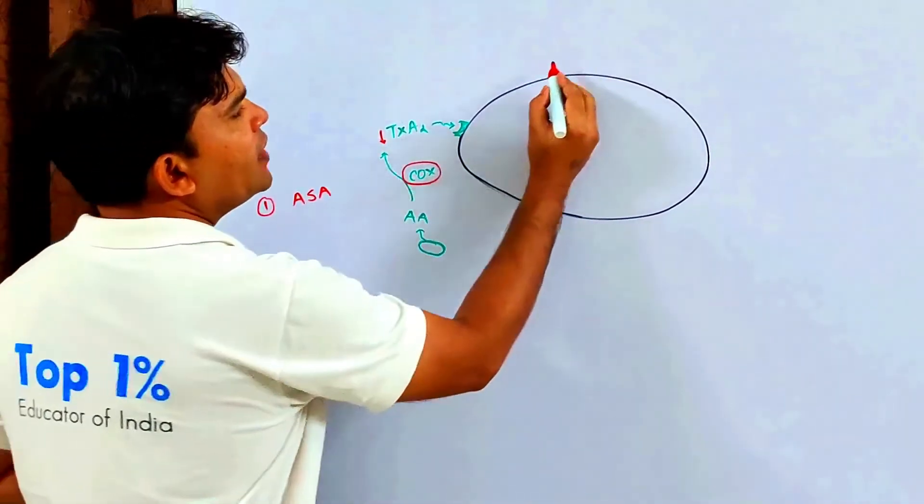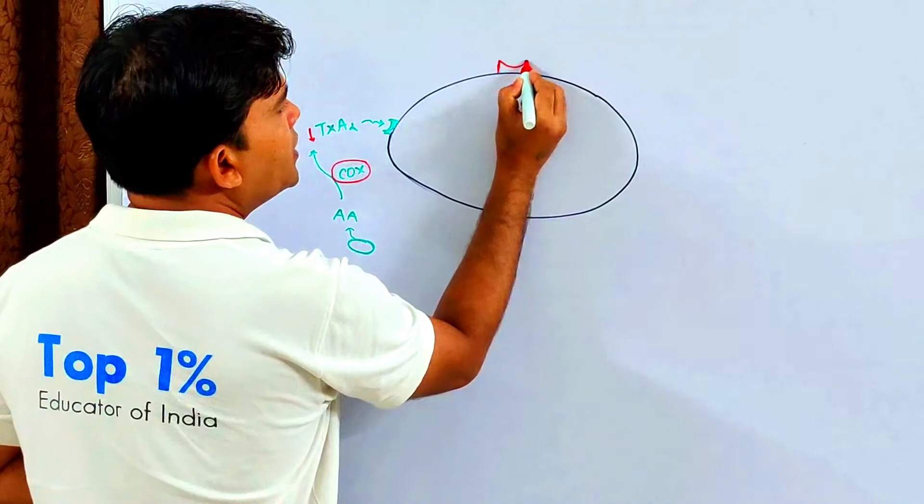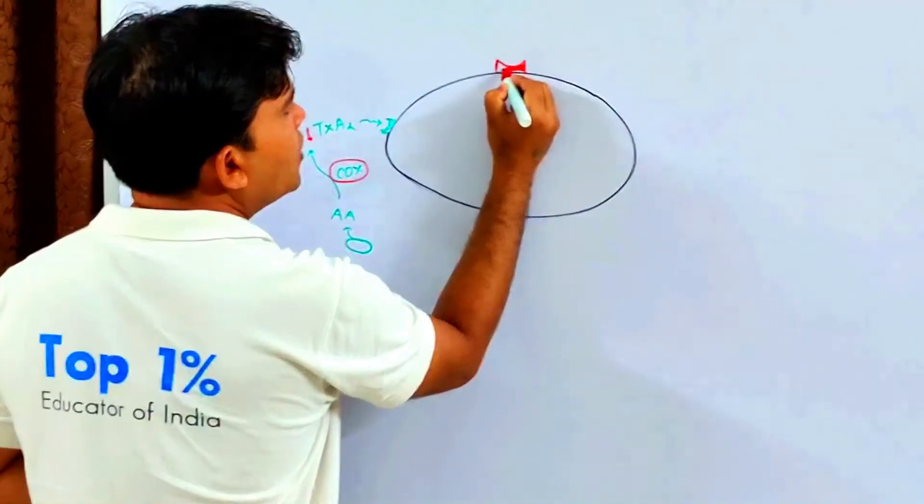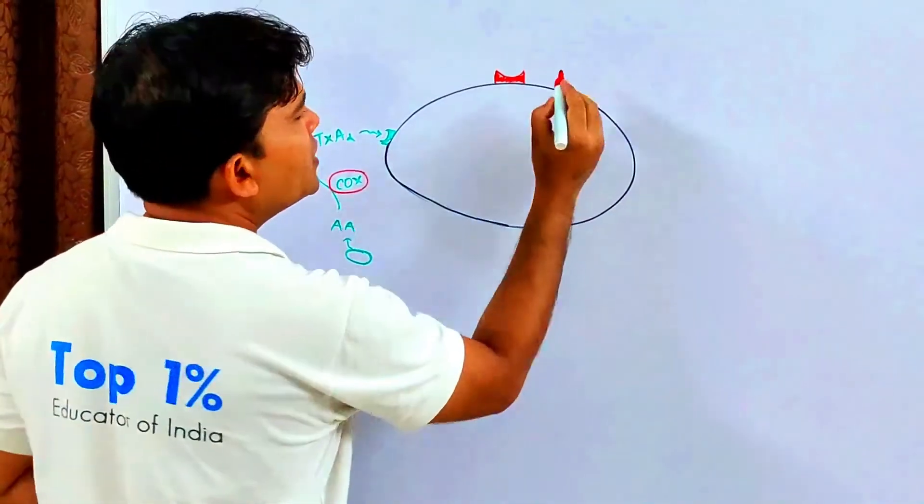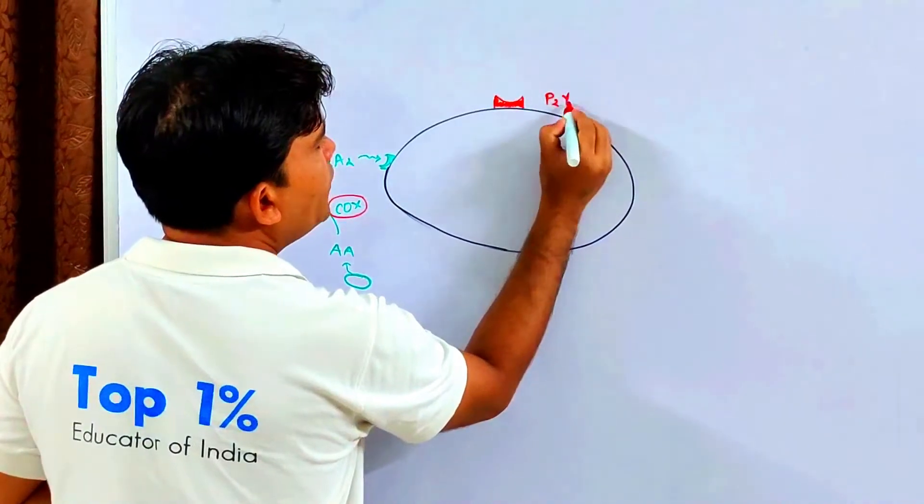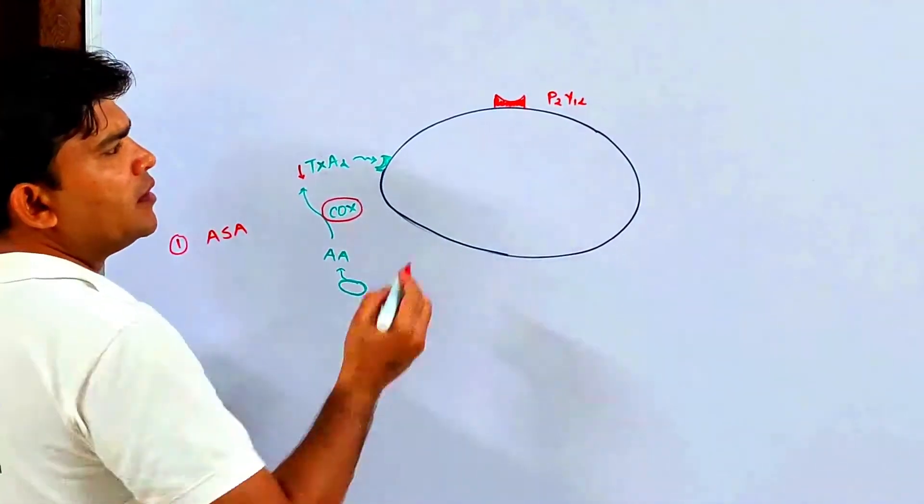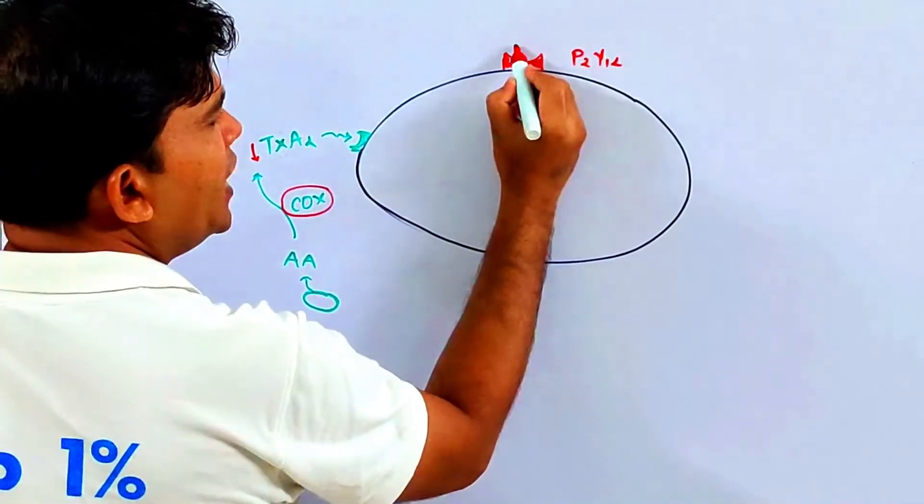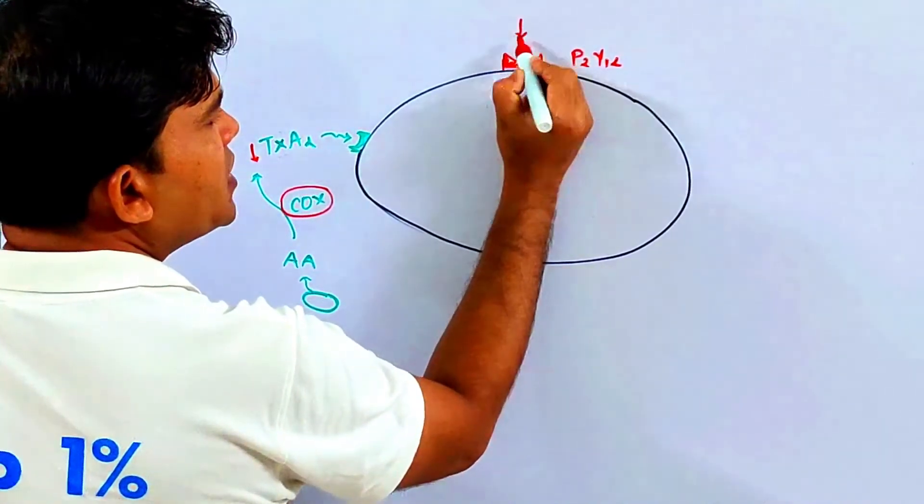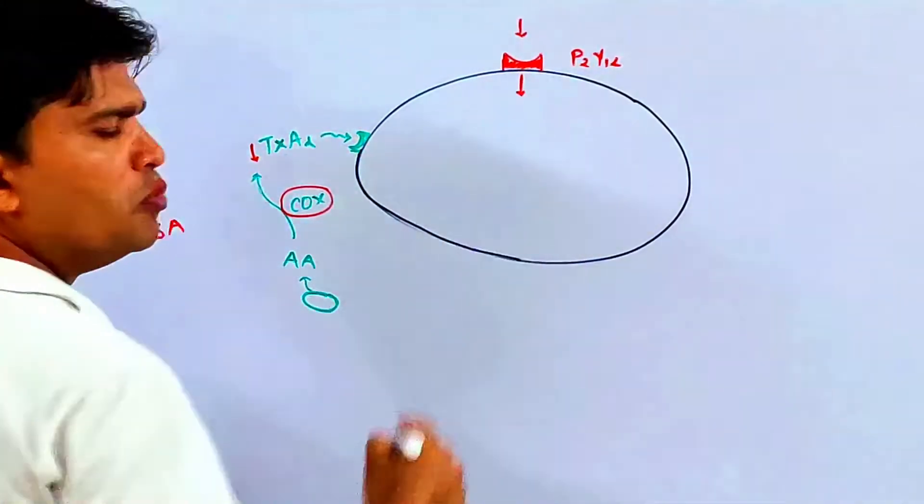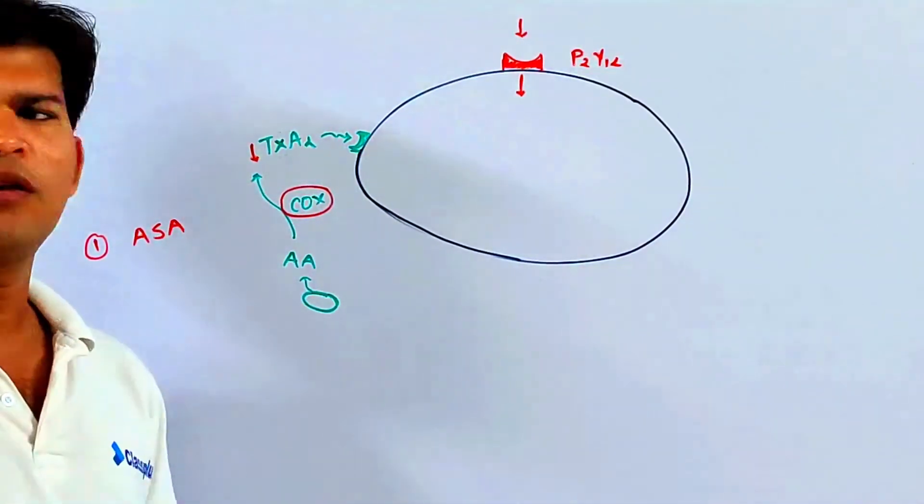And the second is the receptor called ADP receptor, otherwise P2Y12 receptor. Basically, the ADP binds with this receptor and gives an intracellular stimulated signal for platelet activation and platelet aggregation.